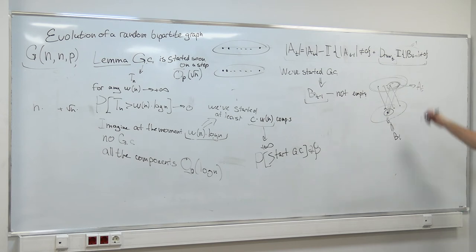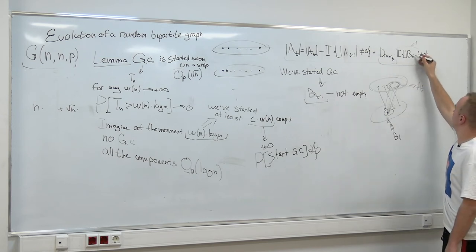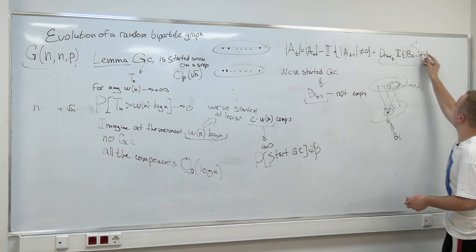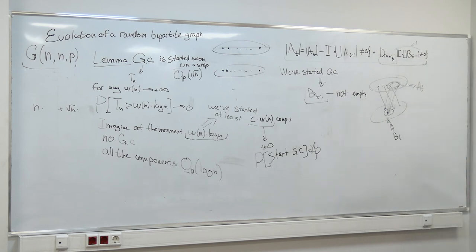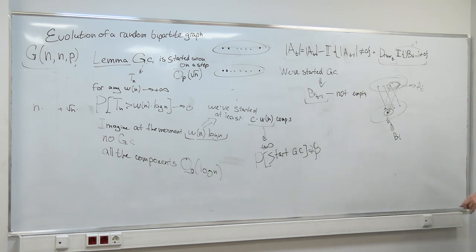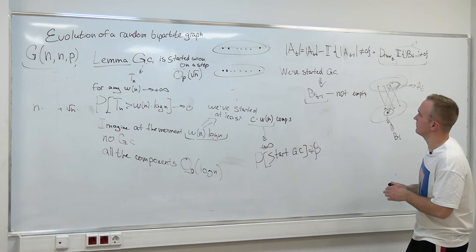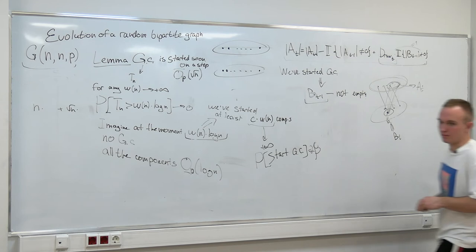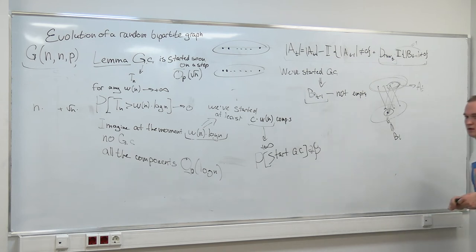Until the moment when B_T is empty, this indicator equals one, and the formula for the number of active vertices is exactly the same as in the regular G(N,P) case. At this point, we want to reduce everything to the same claim for non-bipartite G(N,P).